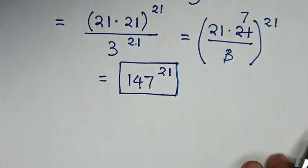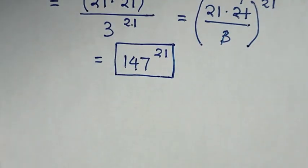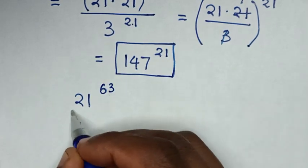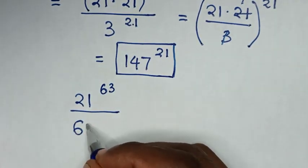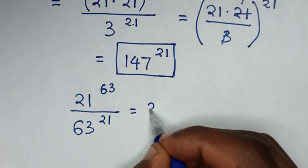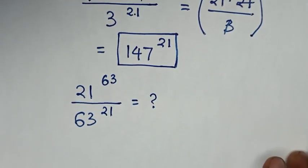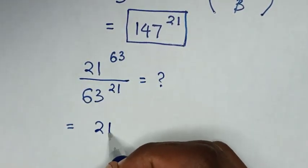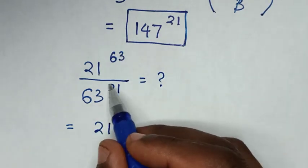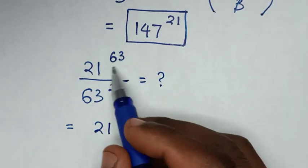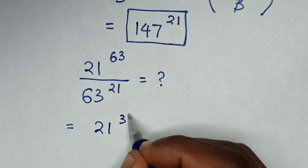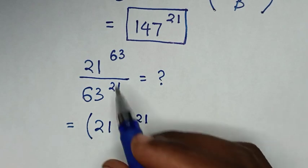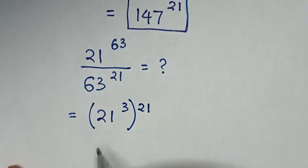Or to solve in another method. From our problem, which is 21 power of 63 divide by 63 power of 21. So it will be equal to 21 power of 63 — we make to have common power of 21. So 63 is same as power of 3, then bracket power of 21, as 3 times 21 is power of 63, then divide by this exponent.